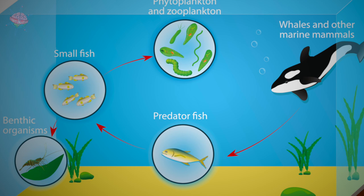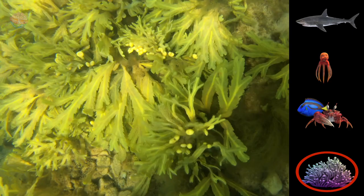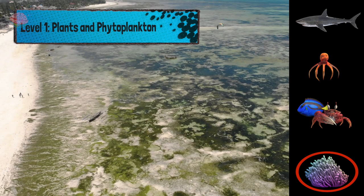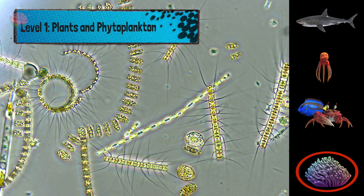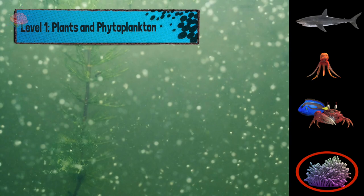Level 1: Plants and phytoplankton. Producers use energy from the sun to grow — this process is called photosynthesis. Along the coast, seaweed and seagrasses are important producers. Out in the ocean, phytoplankton — drifting plants — are the key producers. These tiny one-celled organisms are mostly invisible to the human eye.